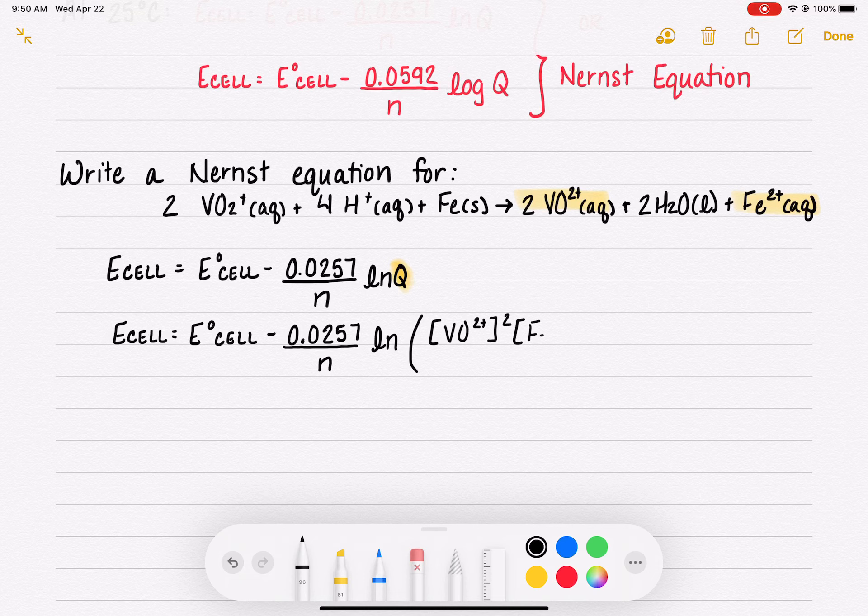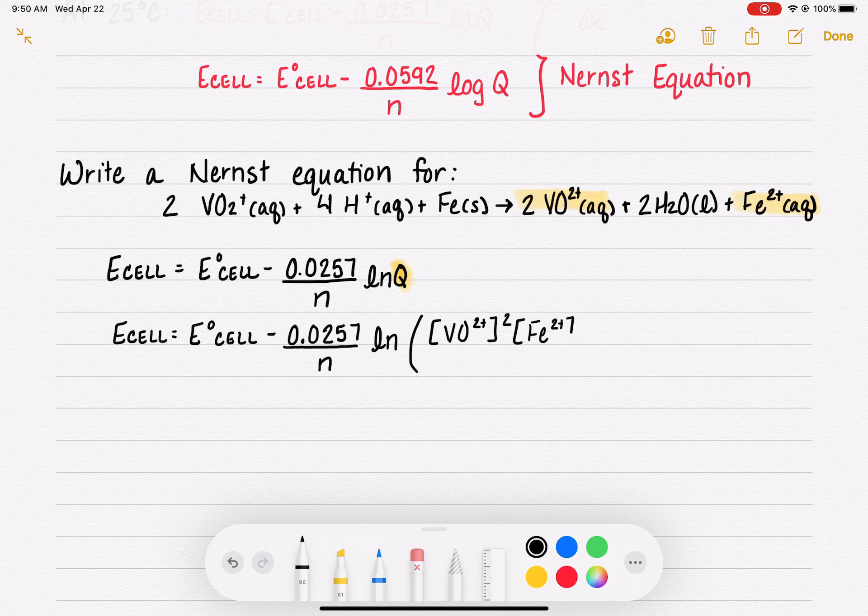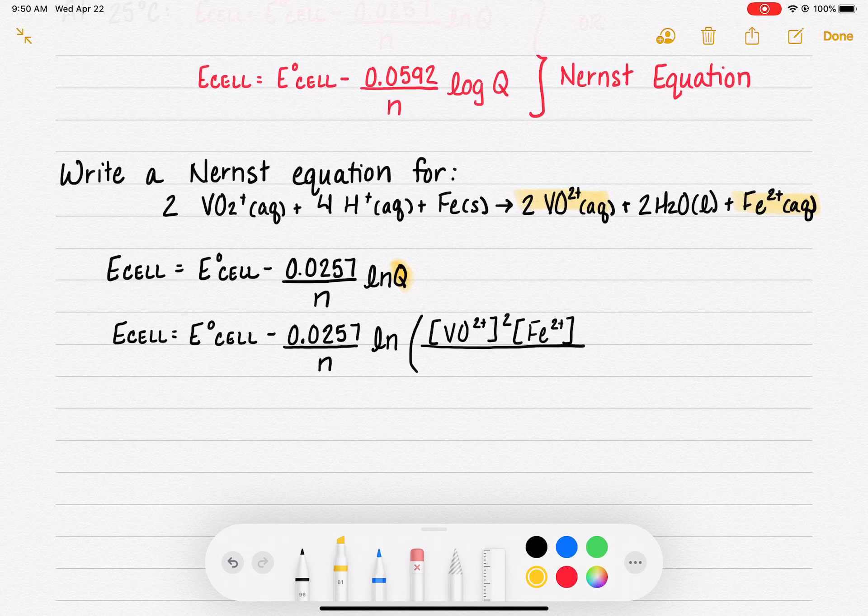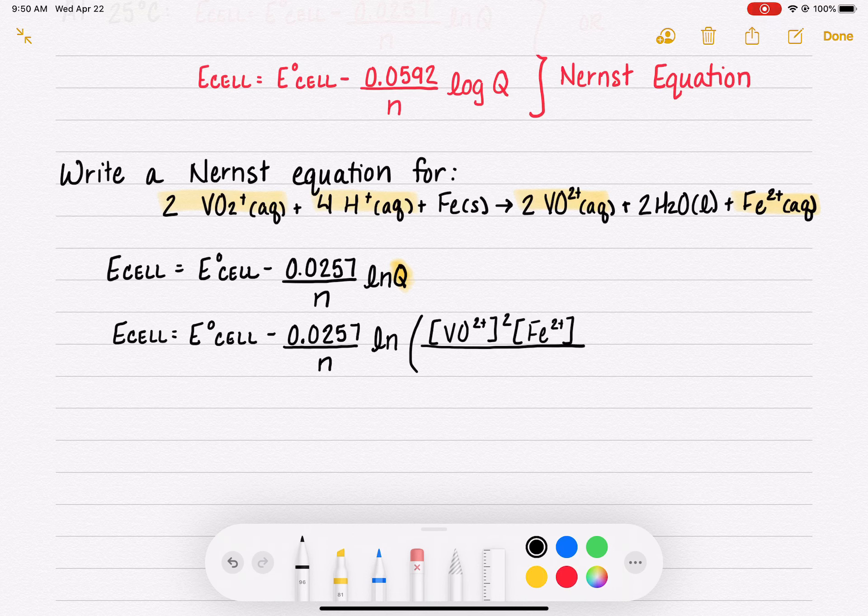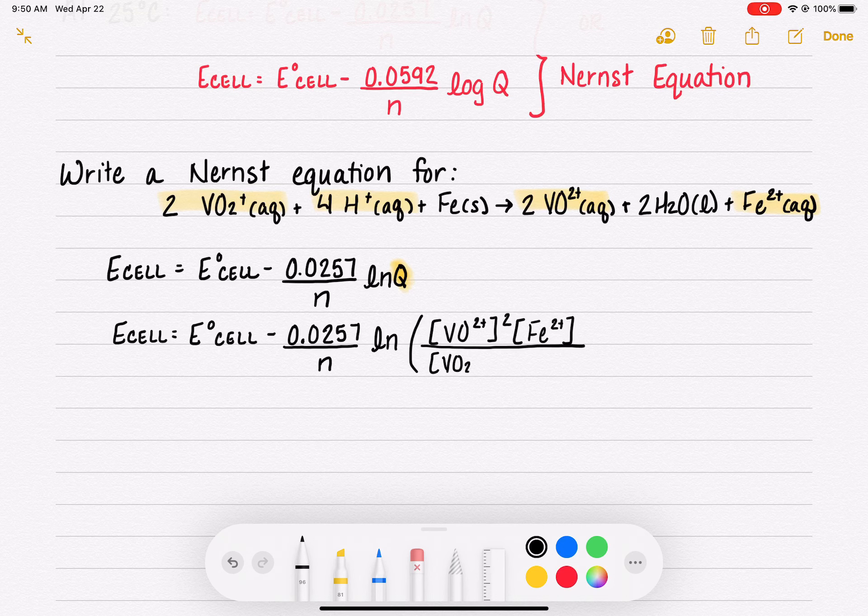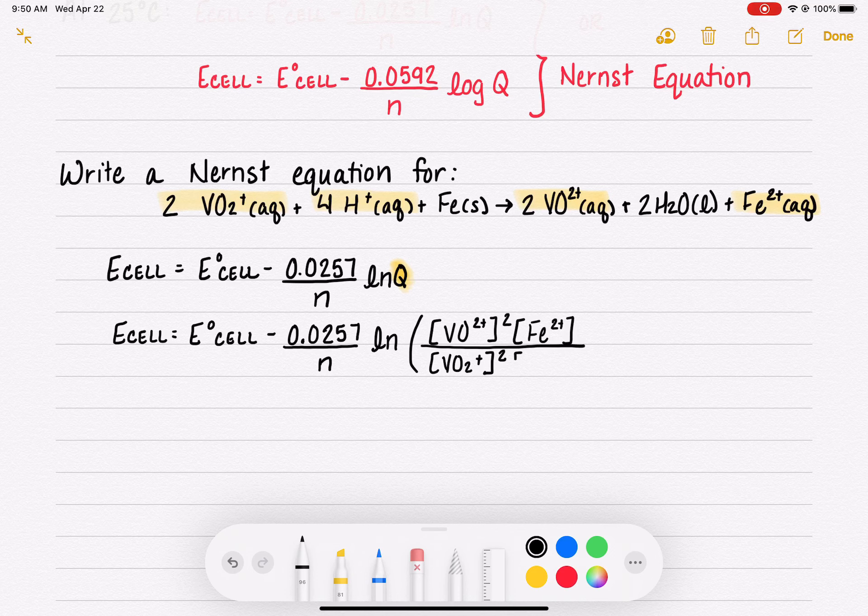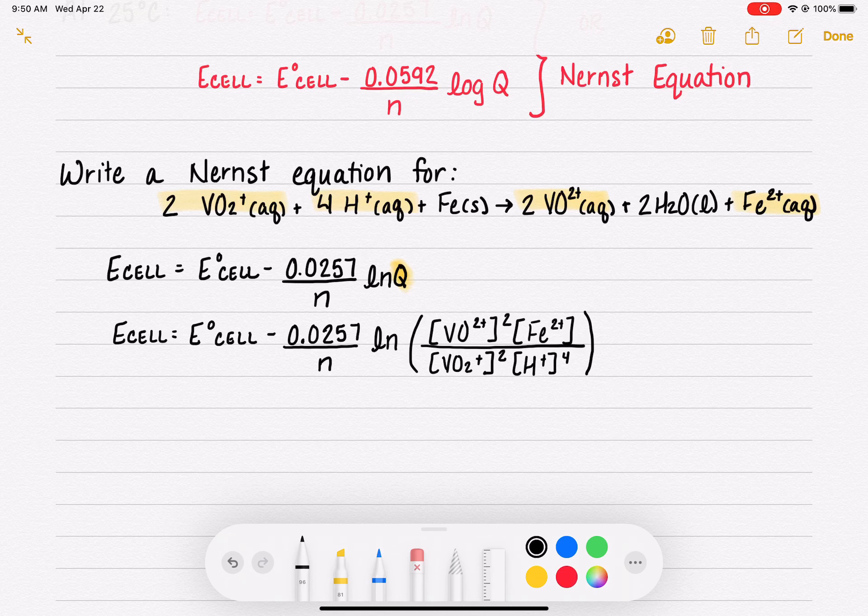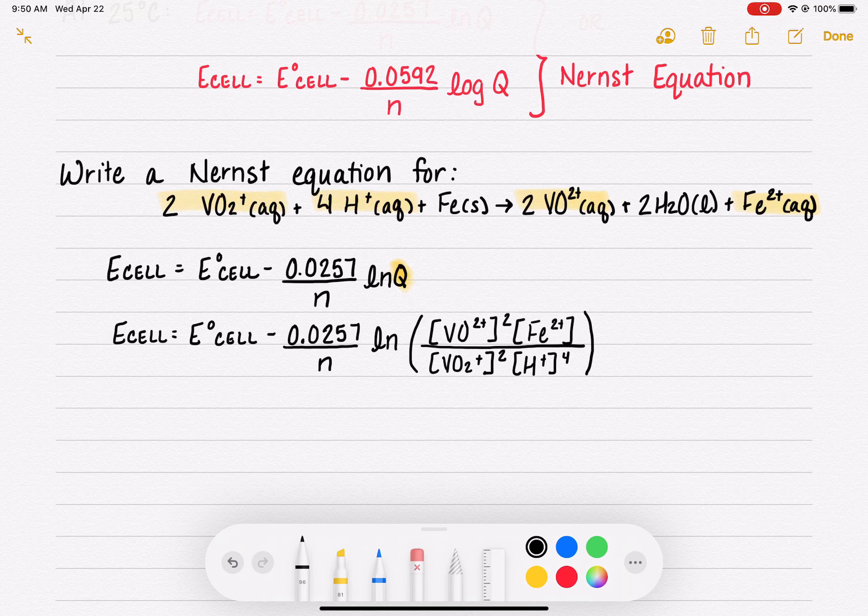And then we also have Fe²⁺ with a coefficient of 1. So now we're going to look over on our reactant side. We have VO₂⁺ aqueous and we have hydrogen ions H⁺ aqueous. We're going to leave out the iron because it's a solid. So we have VO₂⁺ to the 2 and we have H⁺ to the 4. And so now we have our Q ready. Once we knew some information we'd be able to plug in concentrations for all four of these things.